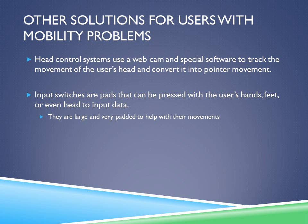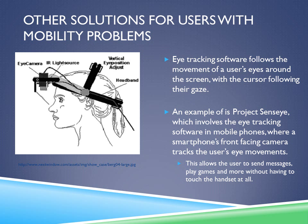Other solutions for users with mobility problems include head control systems, which use a webcam and special software to track the movement of the user's head and convert it into pointer movement. Another type is input switches — pads that can be pressed with the user's hands, feet, or even head to input data. They are very large and padded to help with the user's movements. Eye tracking software follows the movements of a user's eyes around the screen, with the cursor following their gaze.